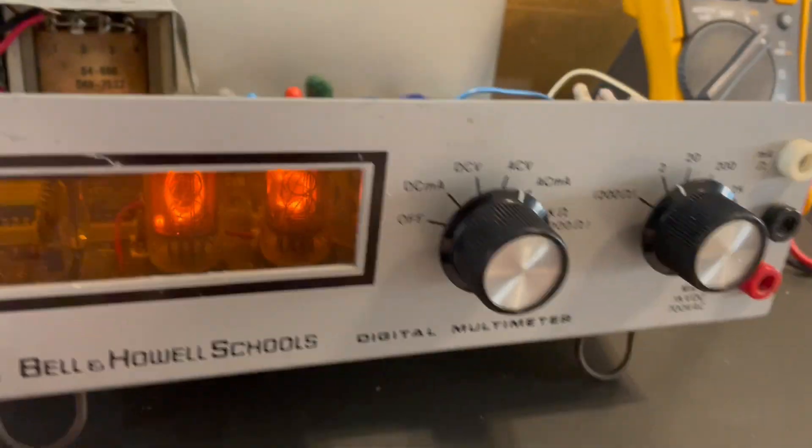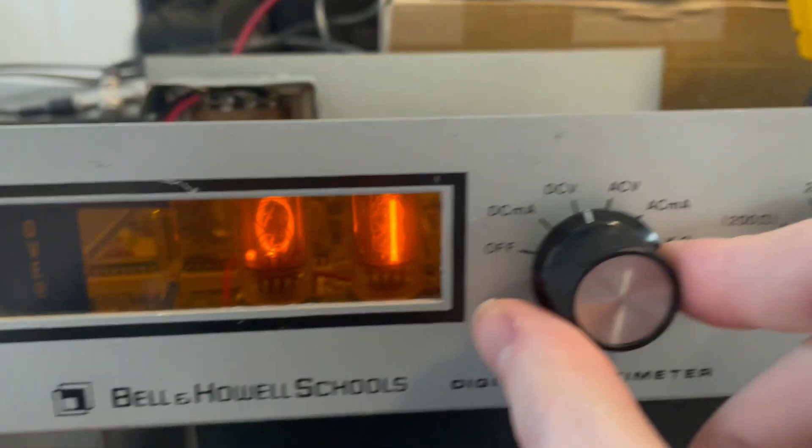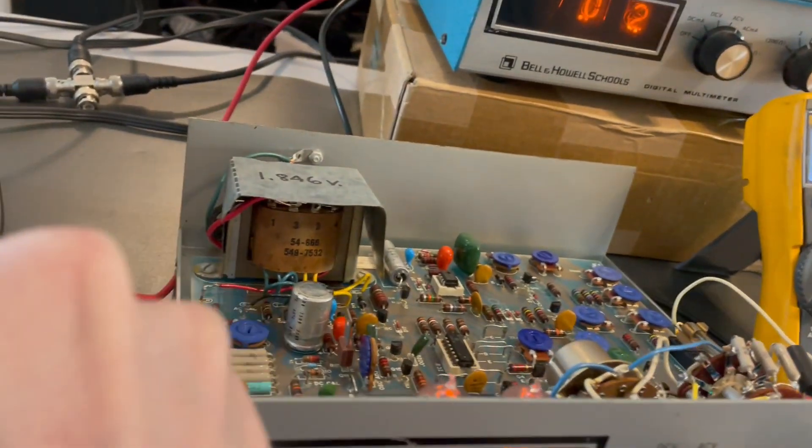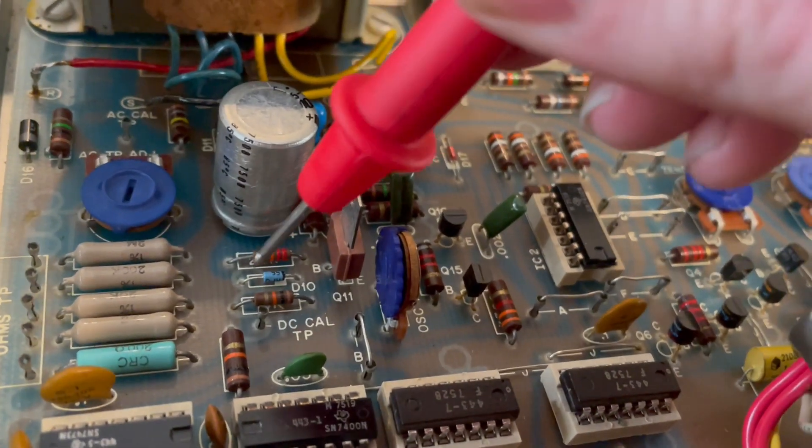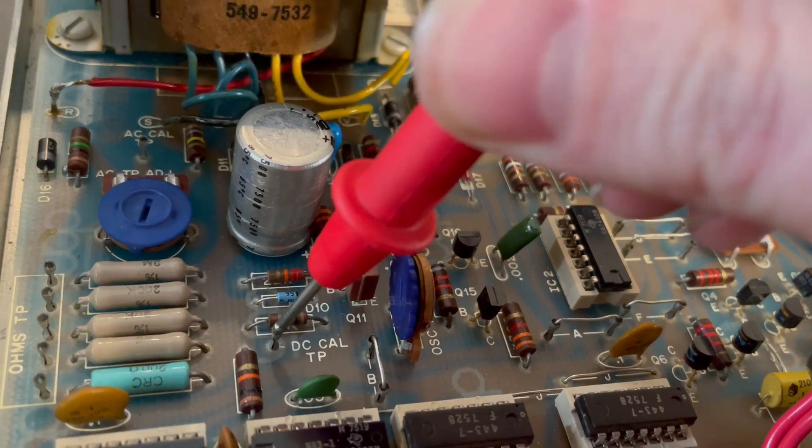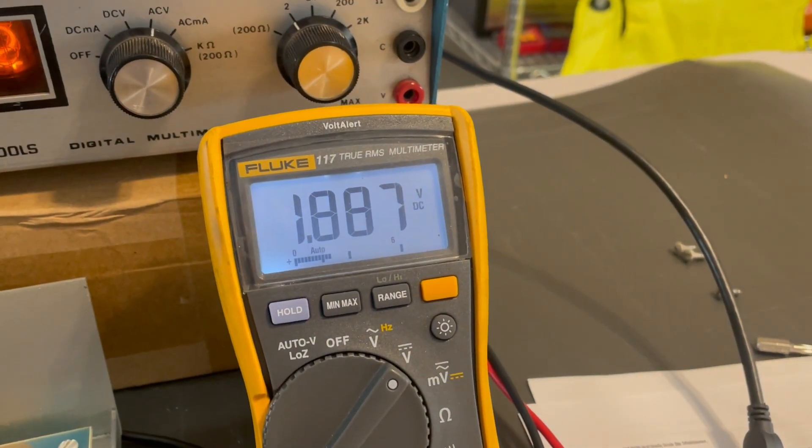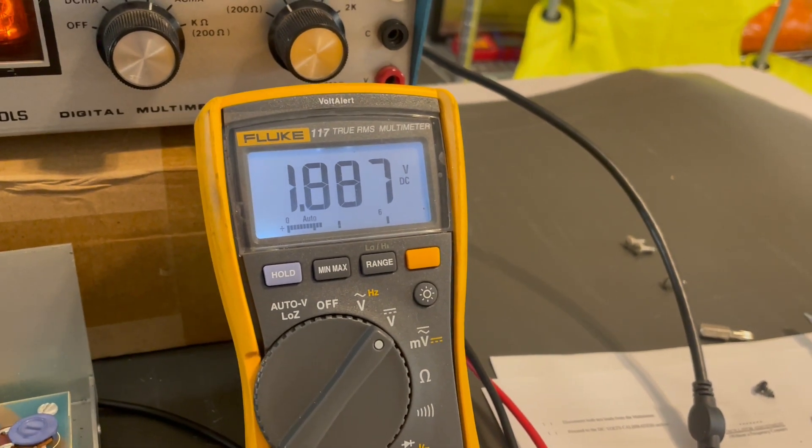I'm going to make sure this is on DC voltage and be very careful poking in here because there is mains voltage going through that transformer in the back. I can sneakily get my probe onto the DC test point and then I can read the voltage, which I'm getting about 1.887 consistently.